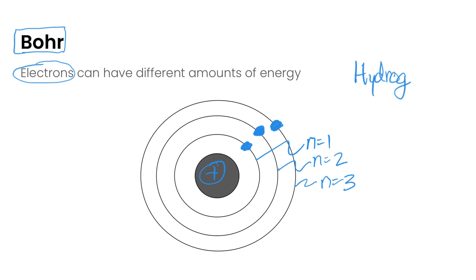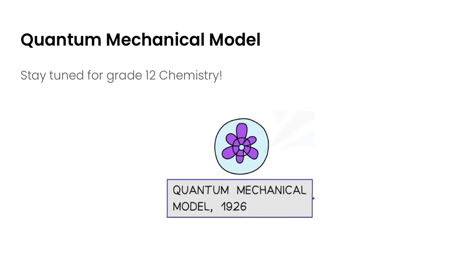In later chemistry courses, if you take grade 12 chemistry, you're actually going to learn about the quantum mechanical model. This model of the atom is our current understanding of what the atom looks like. It starts to get kind of fun, a little complicated, but it's really neat because we use quantum mechanics to explain our current understanding of the atom.